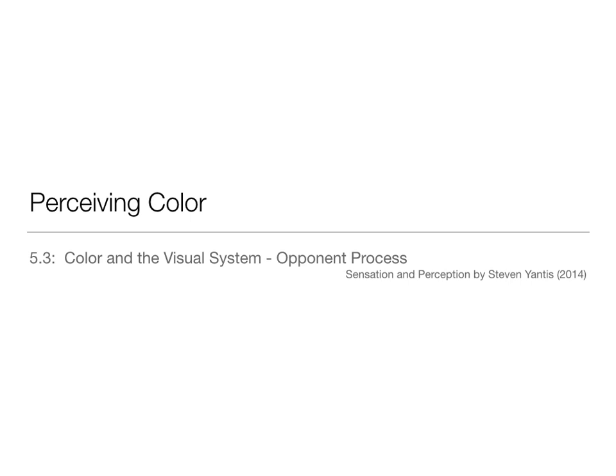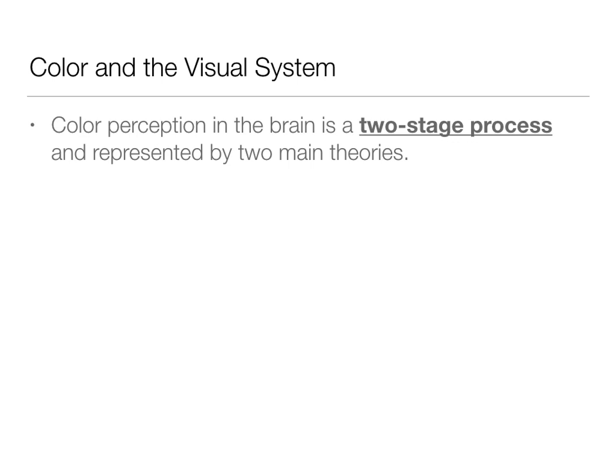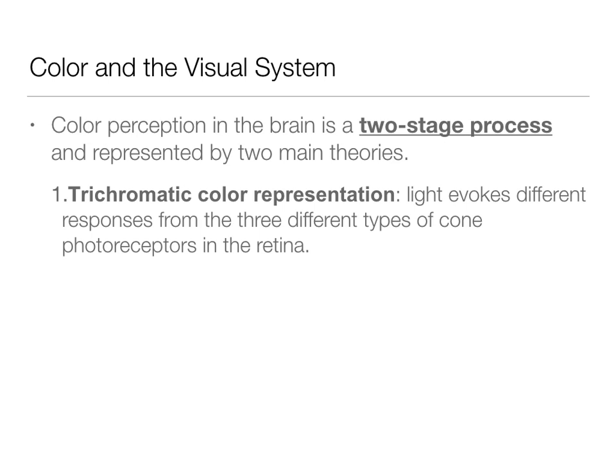Like we said in the last lecture, the color perception of the brain is a two-stage process and is represented by two main theories. We've already talked about the trichromatic color representation theory — that we have three different kinds of photoreceptors in the retina, responsible for some of the differences we have in color perception, and that different lights evoke different responses from these different kinds of receptors.